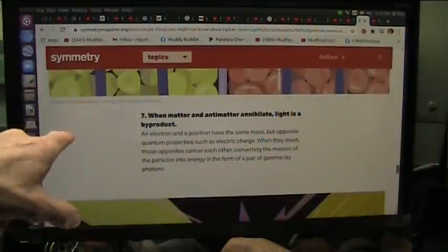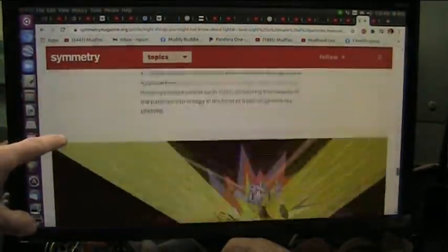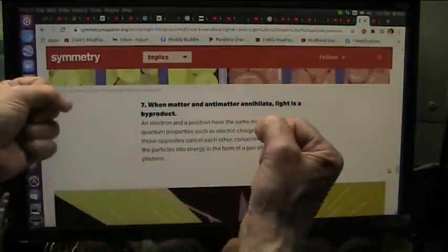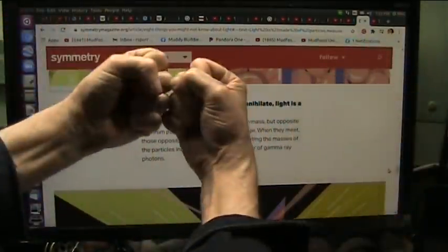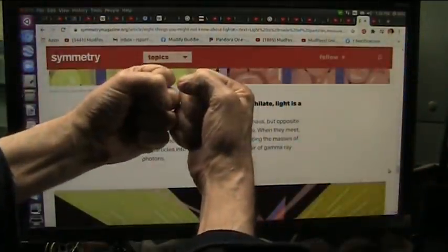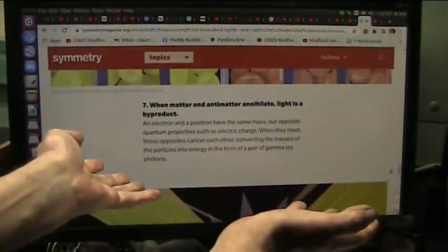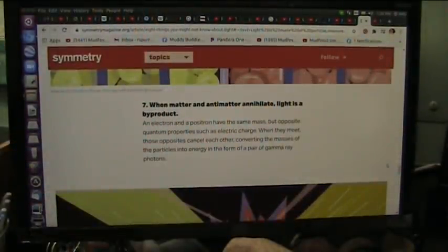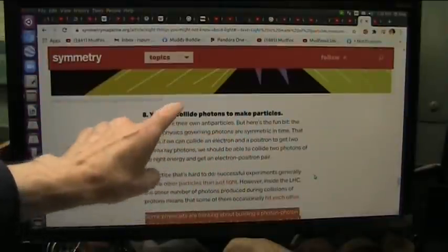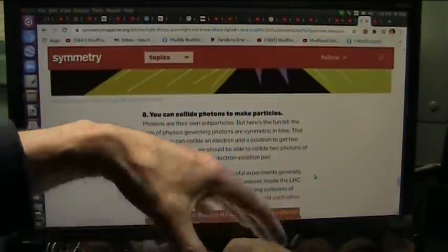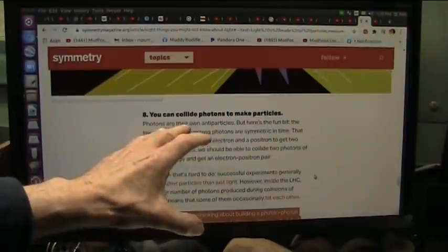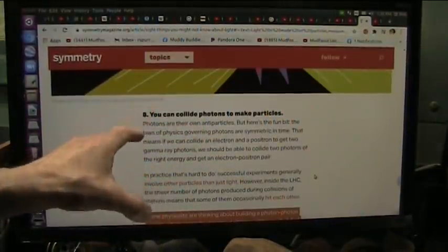When matter and antimatter annihilate, light is a byproduct. I disagree with that 100%. When matter and antimatter annihilate, that's not what happens. When two power hit, they would have caused what I call push to shove, and that creates glow. Light is the glow, and it's another push. What it pushes into is other particles. You can collide photons to make particles because all there is is photons that eventually incorporate into something as electrons. That's all that makes everything.